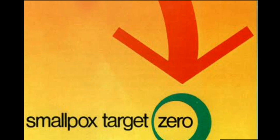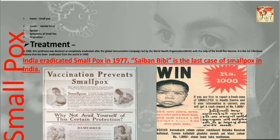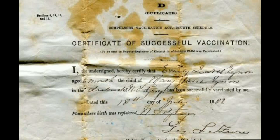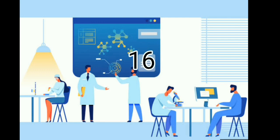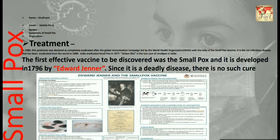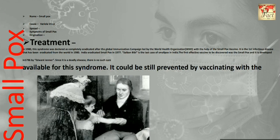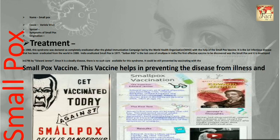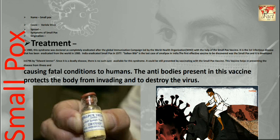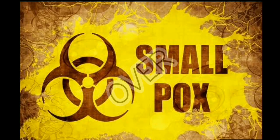Primarily due to this pandemic, by January 1975, an operation called Target Zero was started, aimed at containing the last cases of smallpox. India eradicated smallpox in 1977. Saiban BB was the last recorded case of smallpox in India. Before issuing a no-smallpox certificate to India, WHO sent 16 scientists and health experts from many countries to visit all states and four Union territories for verification. The first effective vaccine was the smallpox vaccine, developed in 1796 by Edward Jenner. Since it is a deadly disease with no cure available, it can be prevented by vaccinating with the smallpox vaccine, whose antibodies protect the body from the virus.